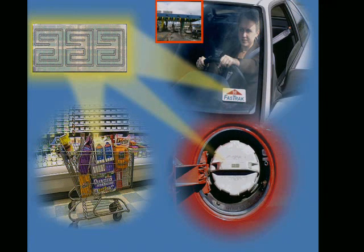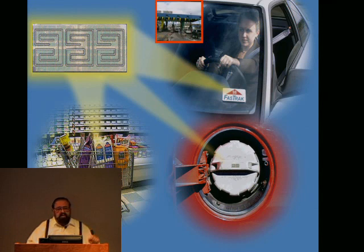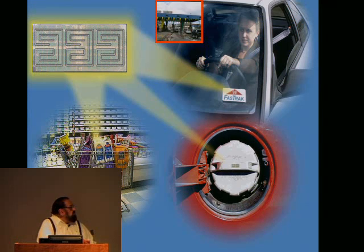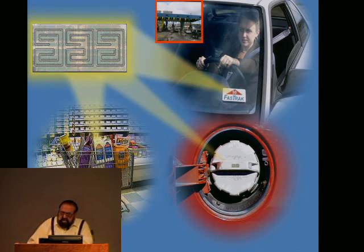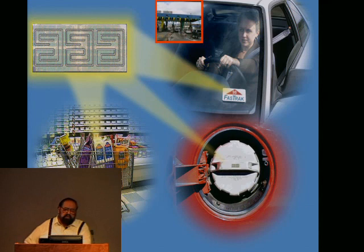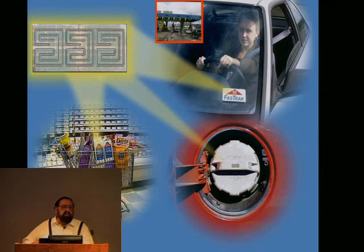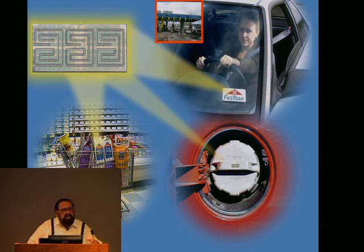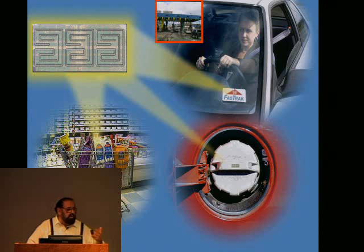Many of you have seen FasTrak tags in car windshields here in Northern California. The FasTrak tag has an RFID inside. When you go by a toll booth without stopping, the toll booth emits radio frequencies, reads the content of the tag — who you are — associates that with the time you passed, and charges you at the end of the month. This RFID toll booth system has existed for a long time. Even McDonald's considered putting a similar system in their drive-through. But what's new is that RFIDs are becoming so cheap and popular that you can put them anywhere in a city or on a road, enabling something called congestion pricing.